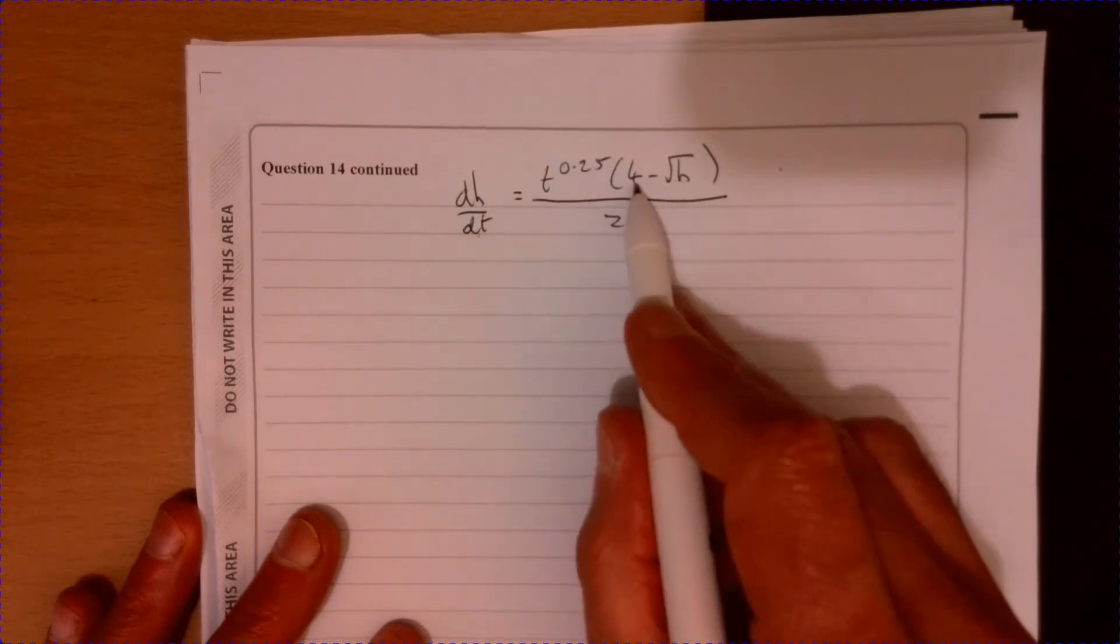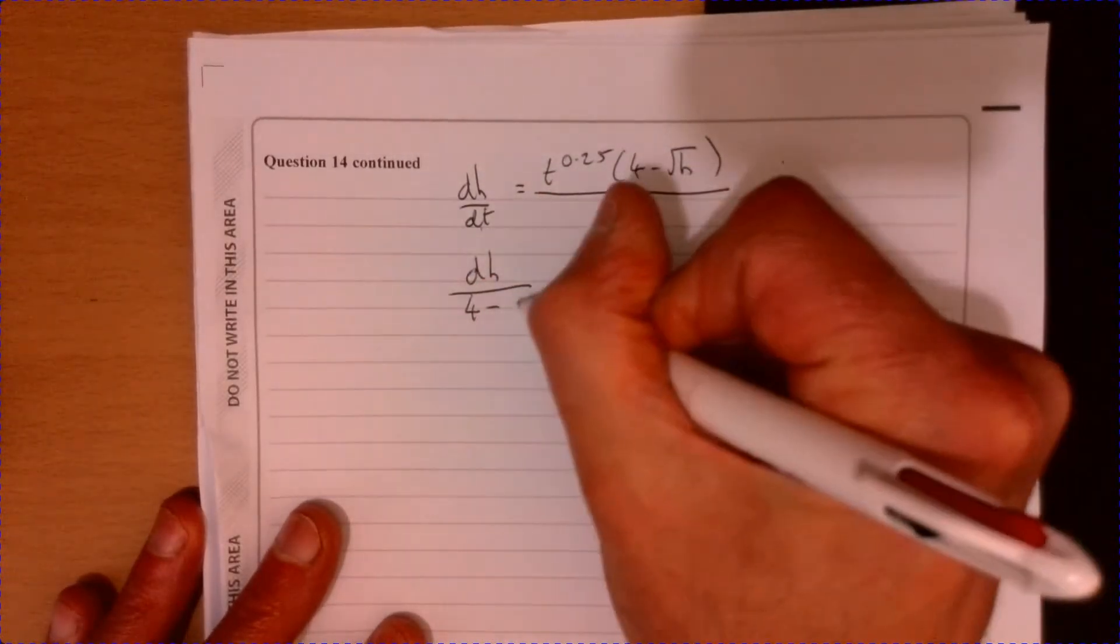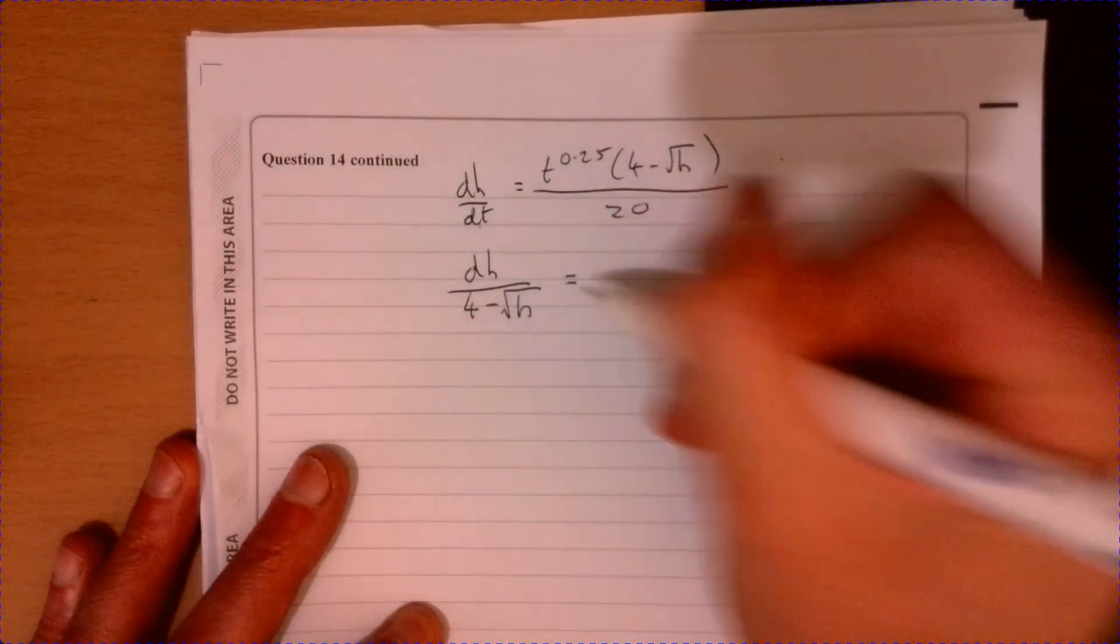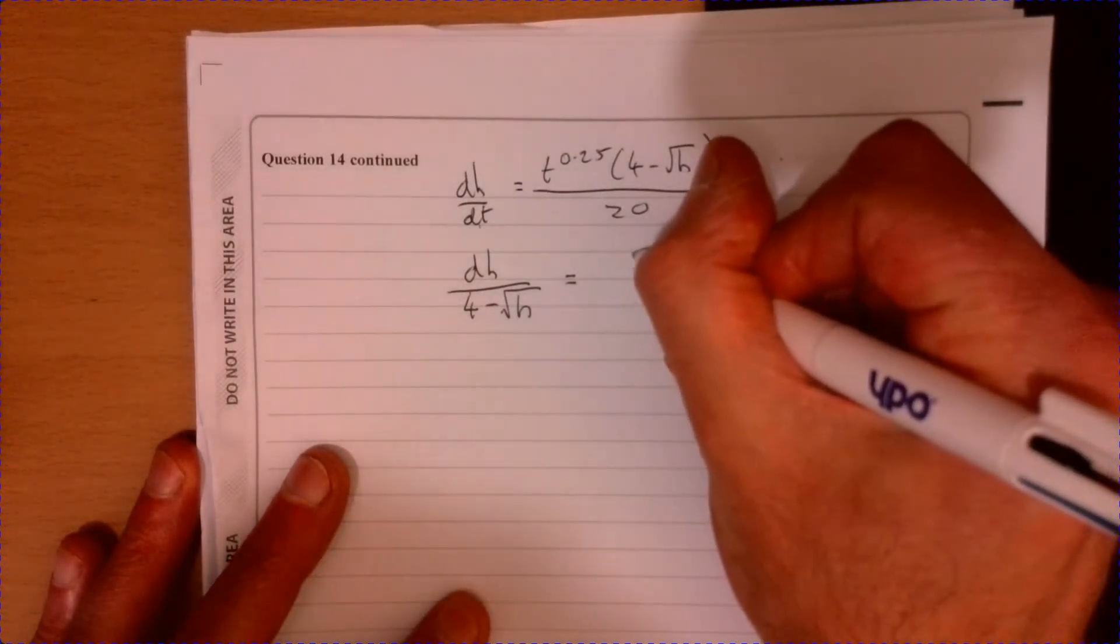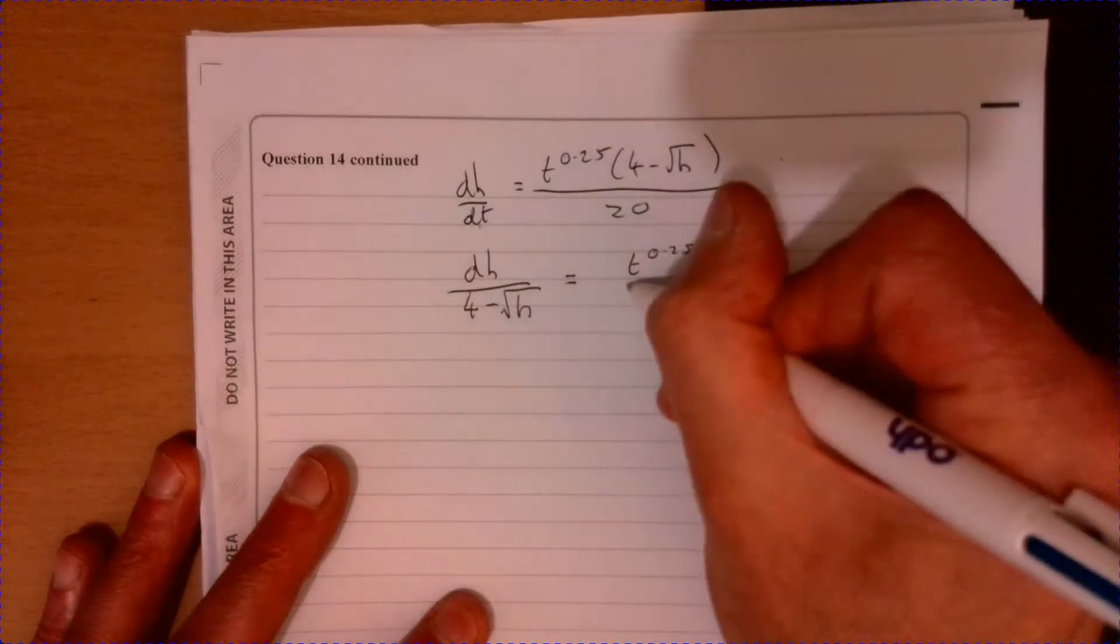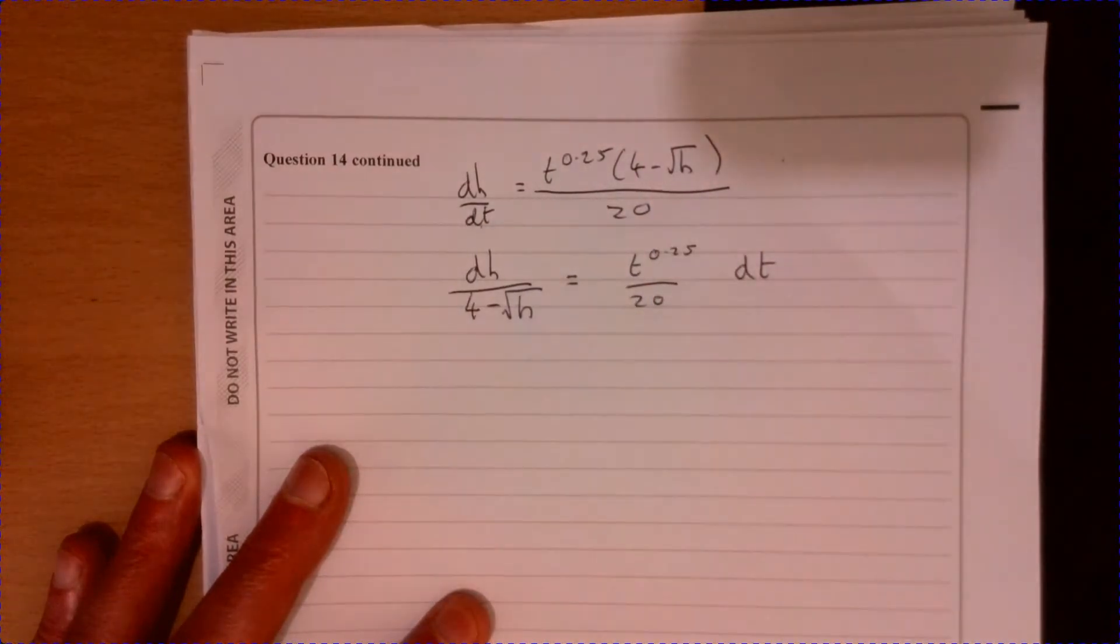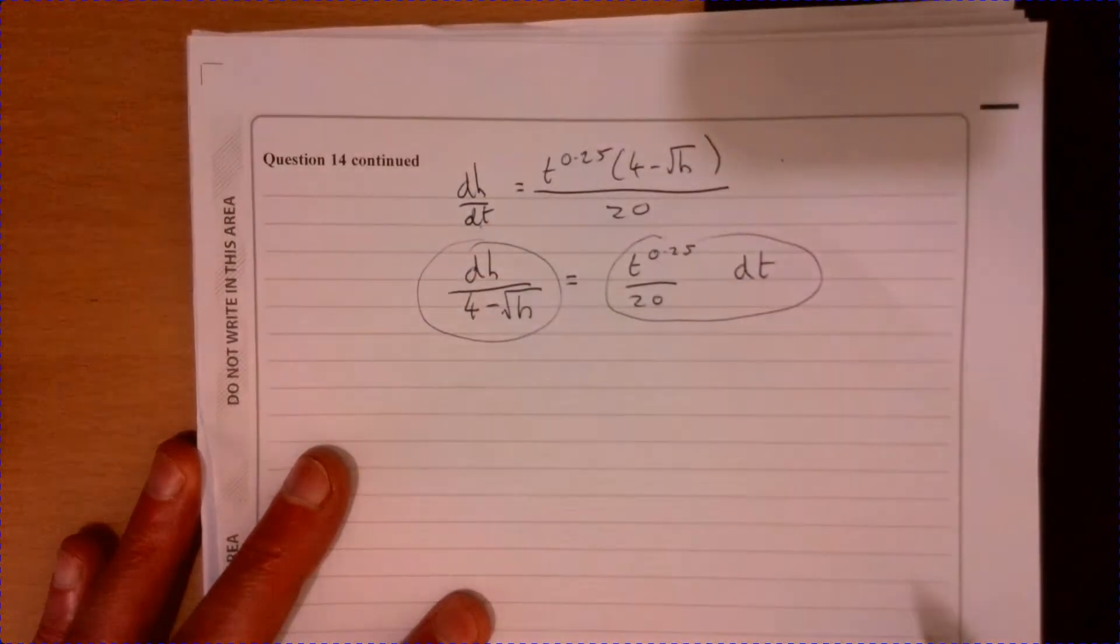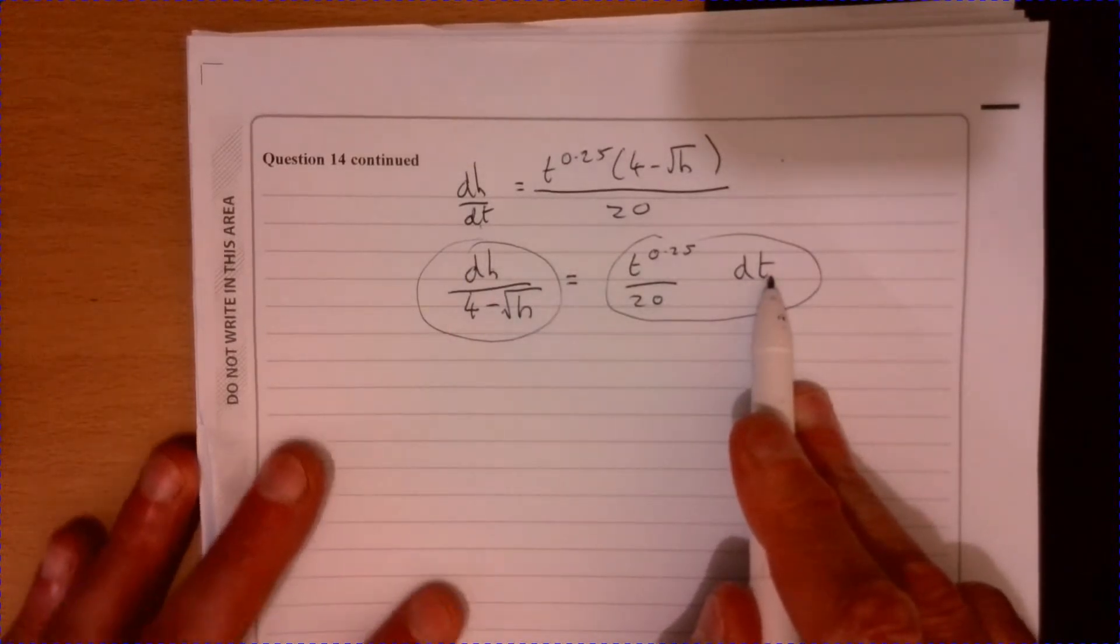So let's have a think about how that's going to happen. We're going to divide by this. So we end up with dh over 4 minus root h. And wait a minute, should recognize that from a moment ago. And then that's going to leave us with t to the 0.25 over 20. Remember that dt's come up over here. So that just basically means we're going to integrate this, integrate this side. This side we're integrating with respect to h. This side we're integrating with respect to t.